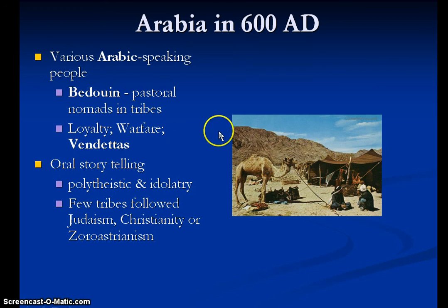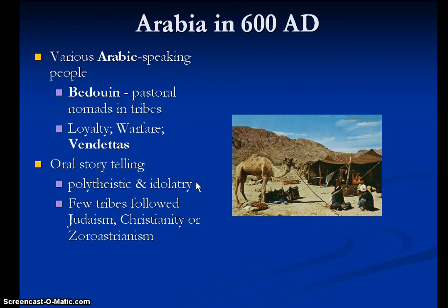Largely, they were polytheistic — they did worship idols — which are going to be two no-nos for the Islamic faith once it develops. A few tribes, however, because they were near enough to different peoples, were exposed to the Judaic tradition, Christianity, and even Zoroastrianism. Many people in Arabia viewed outsiders as people of the book, people of Abraham. The Islamic faith acknowledges people like Abraham, Moses, and Jesus. Jesus isn't the son of God in Islam, but he still is a prophet.